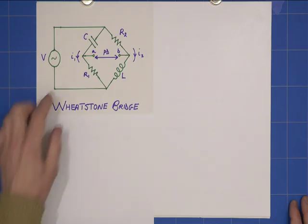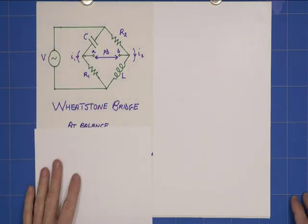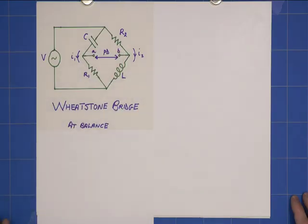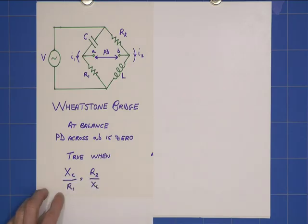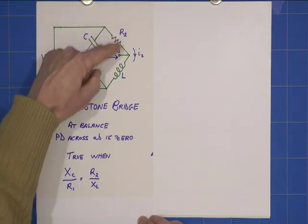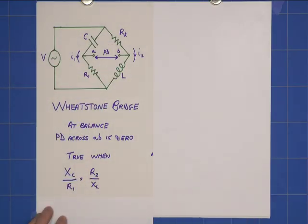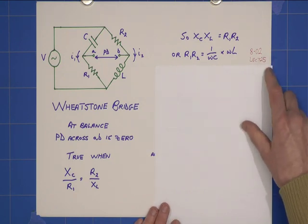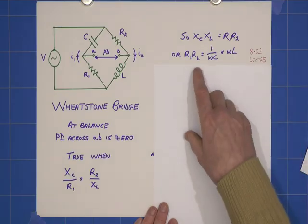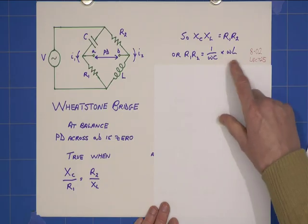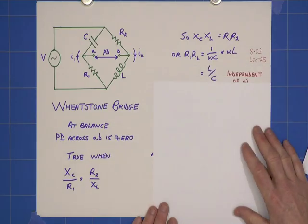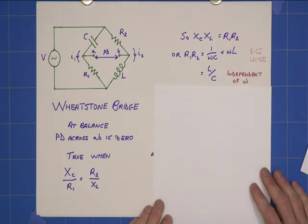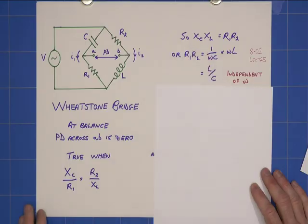Except we have a capacitor and an inductor. Historically, it would have been four resistors, but the principle still applies to any impedance. The condition at balance, where the potential difference across A and B would be zero, is true when the ratio of this impedance to that is the same as the ratio of that impedance to that. When I saw that, I could immediately say this condition is met. Here we have rearranged that, and if you've looked at Walter Lewin's excellent lecture 25 of 8.02, we can see R1 R2 equals 1 over omega C times 1 over omega L, and that cancels down to L over C, independent of omega. I'm considering the modulus, or the size, of the impedances.